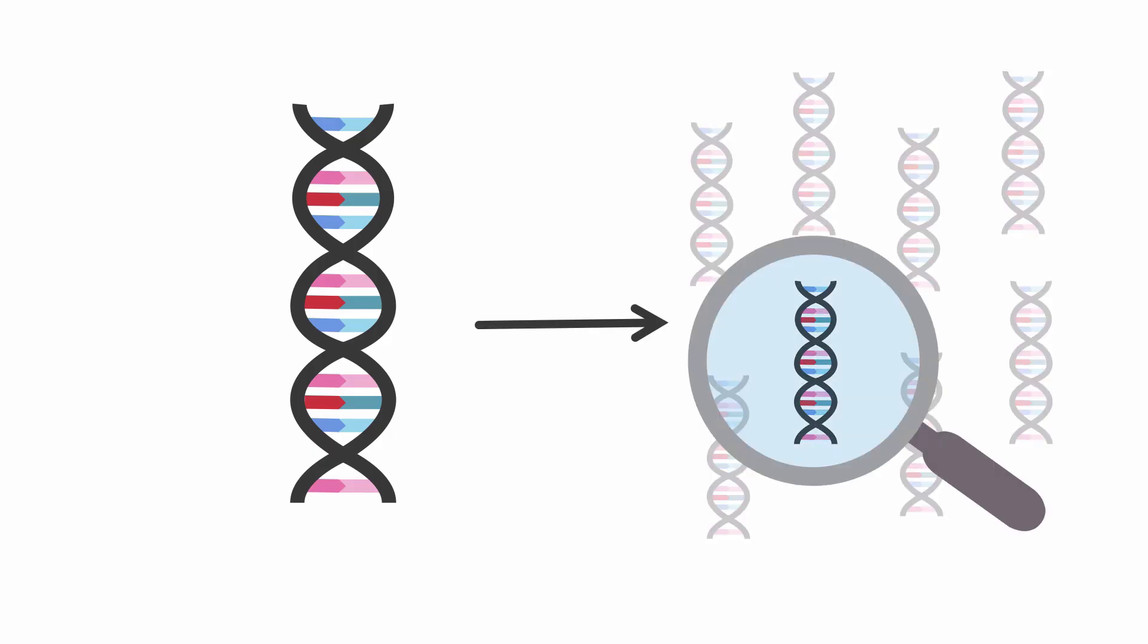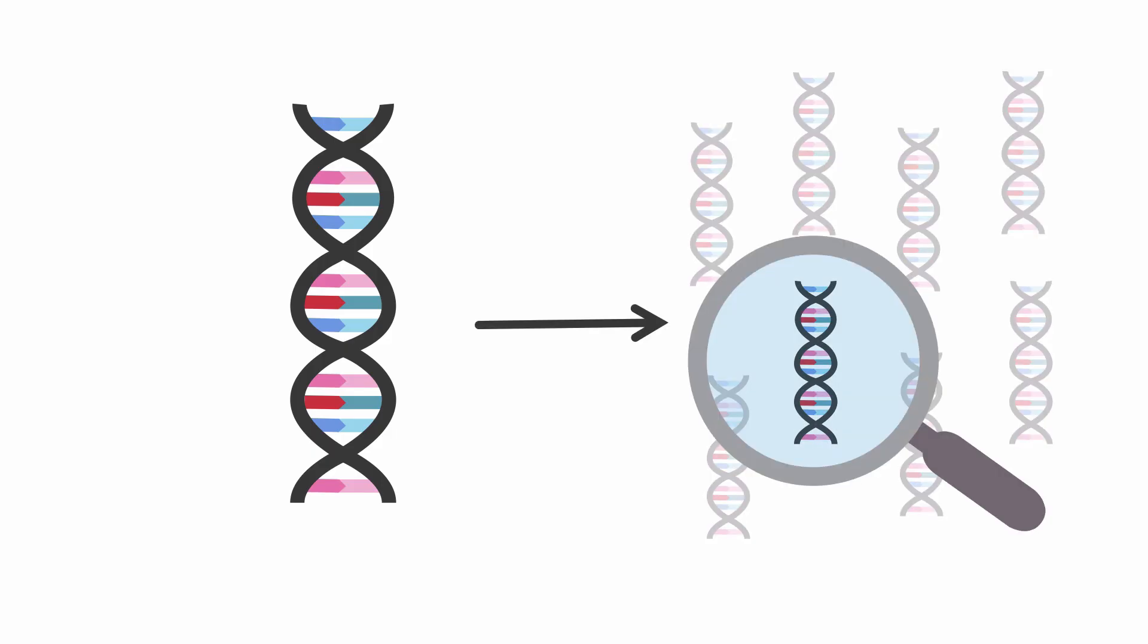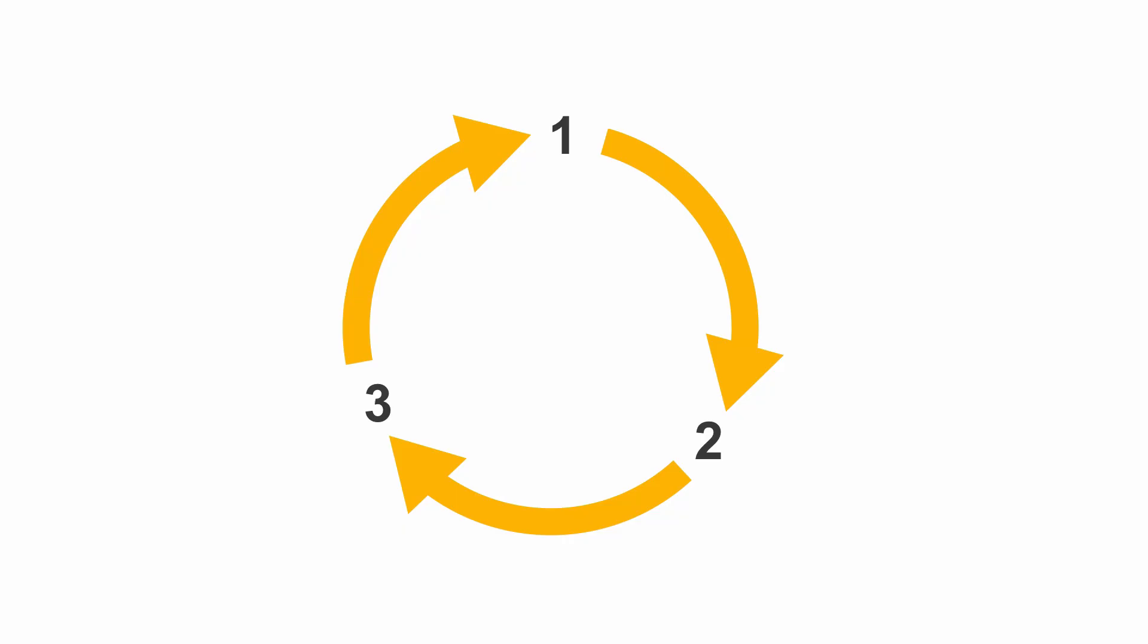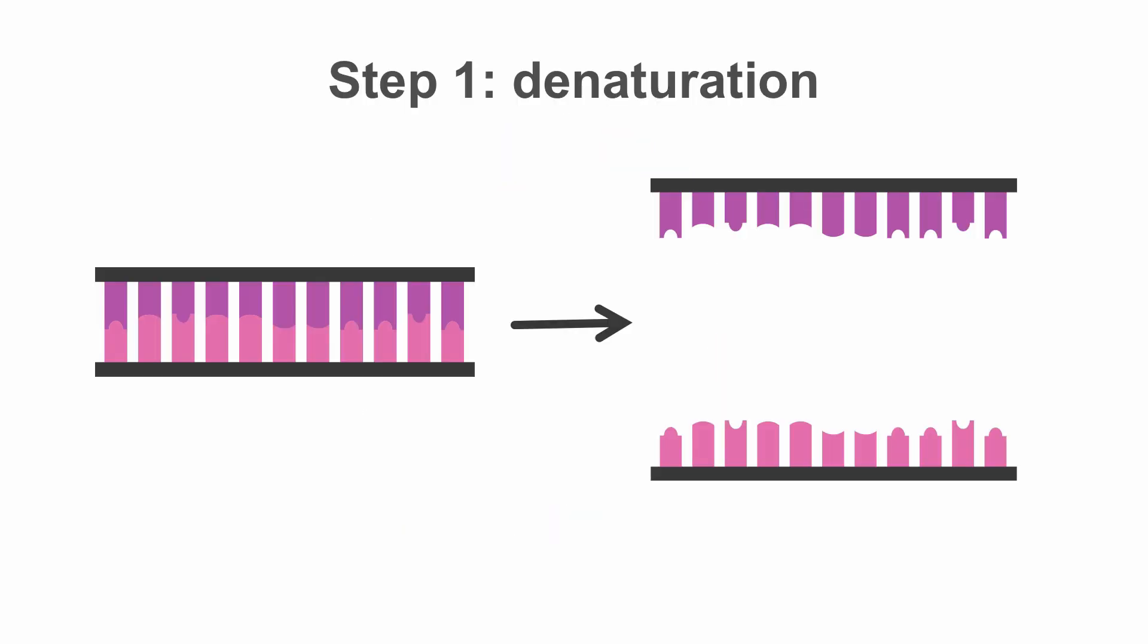For that, we use PCR, which allows us to amplify and detect a specific DNA molecule, in this case, the viral cDNA. PCR involves three basic steps which are repeated about 40 times. In the first step, all the double-stranded DNA molecules are denatured, meaning the two strands are separated.